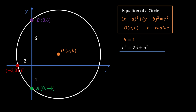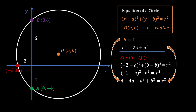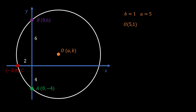Now we use the equation of the circle again for point C with coordinates (−2, 0). Substituting in, expanding using the square of a binomial, then substituting B equals 1 and R² equals 25 plus A², we find that A² cancels from both sides. We are left with 5 plus 4A equals 25, so 4A equals 20, meaning A equals 5. We now have the coordinates of the center of our circle: A equals 5, B equals 1.